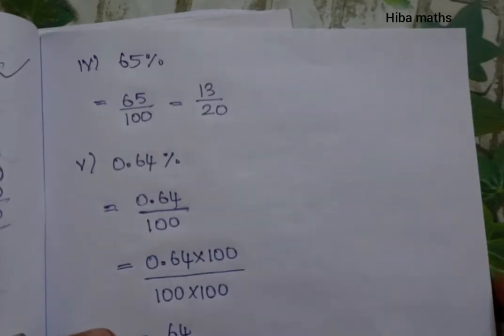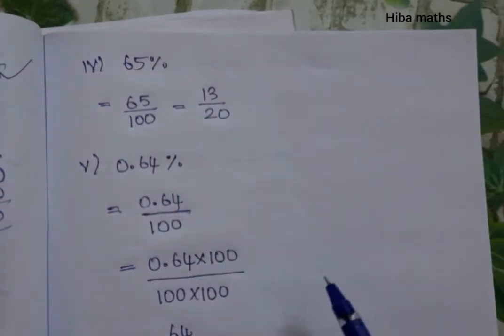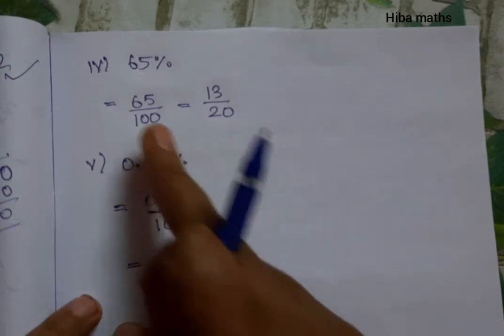The fourth question is 65%. This is easy: 65 divided by 100. We can reduce this fraction. I'm going to show the simplified format.